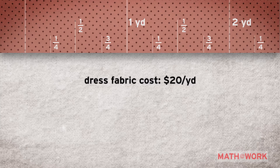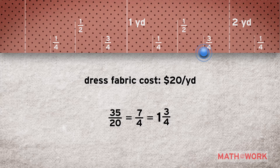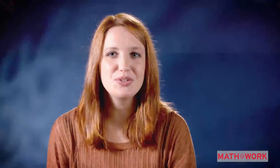We already know that the cost of the dress fabric is $20 per yard. 35 divided by 20 is seven fourths, or one and three fourths yards, which is close to your two-yard estimate. So good news Jessalyn — you have enough money in your budget for half a yard of the lace and one and three fourths yards of the dress fabric.